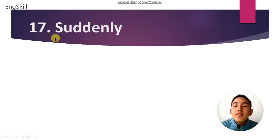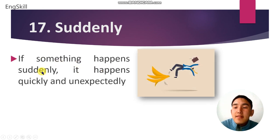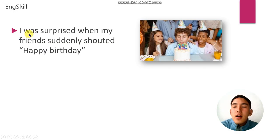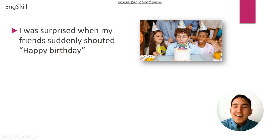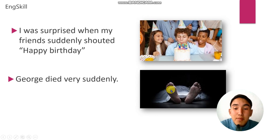Word number 17 is suddenly. If something happens suddenly, it happens quickly and unexpectedly. For example: I was surprised when my friend suddenly shouted 'Happy Birthday!' Example number 2: George died very suddenly and unexpectedly.